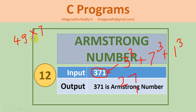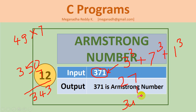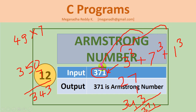49 times 7: we can approximate 15 times 7 as 350, then subtract 7 to get 343. Adding 27 plus 343 plus 1, we get 8 and carry, giving us 371. So the sum of cubes of the individual digits equals the same number, so we call it an Armstrong number.